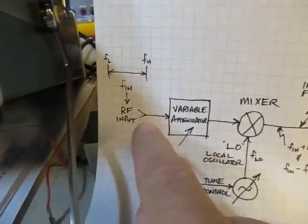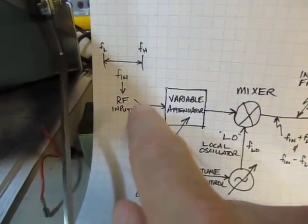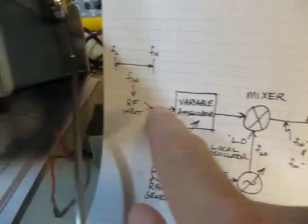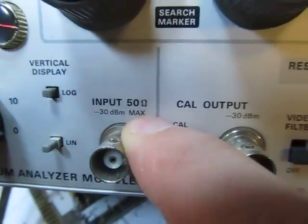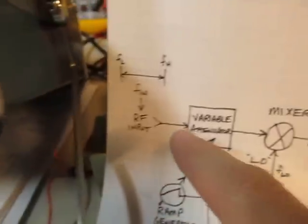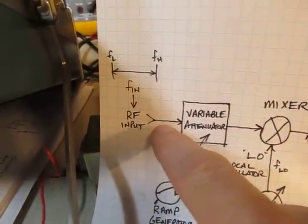Most of the spectrum analyzers will have a warning right on the front panel to tell you the maximum signal level that's available or that you can put in there, like this one says minus 30 dBm max. So it will tell you the maximum RF level but it will also tell you the maximum DC voltage level typically.